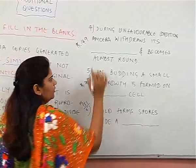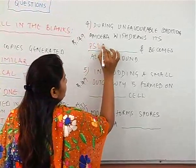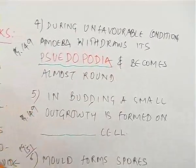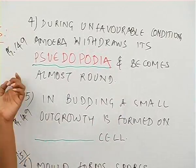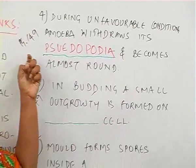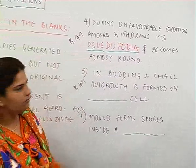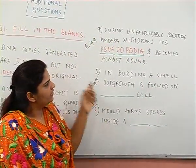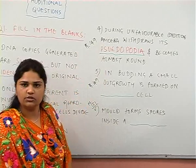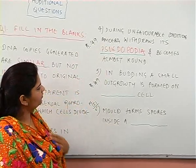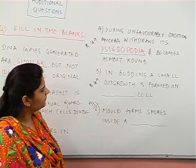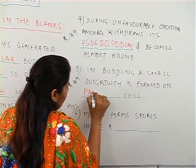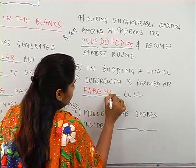The answer is pseudopodia. This fill-in-the-blank is picked up from page 149 of your textbook — be careful about the spelling: pseudopodia. The fifth question from page 149: in budding, a small outgrowth is formed on the parental cell.